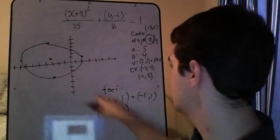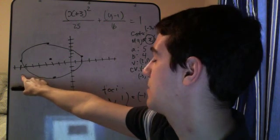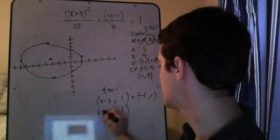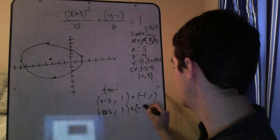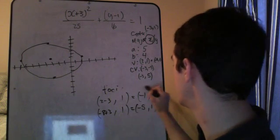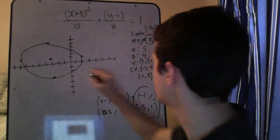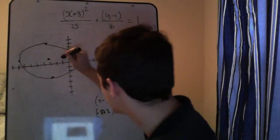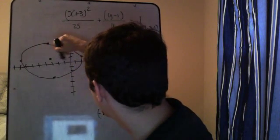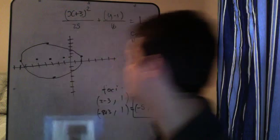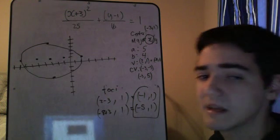And the next one is this one out here. And you're going to add 3 to negative 8. And you get negative 5. And those are your foci. And you just plot those right on the inside, which is right here. And right 1, 2, 3, 4, 5, right there. Okay? And you would label those.